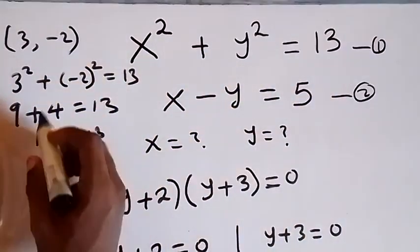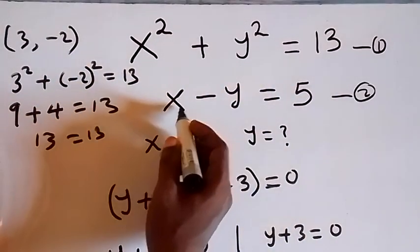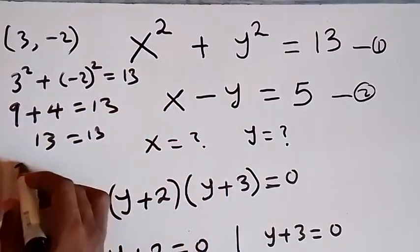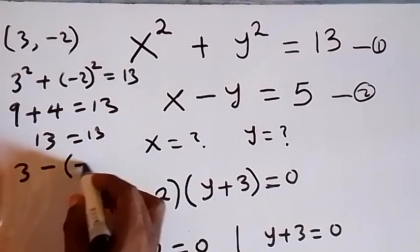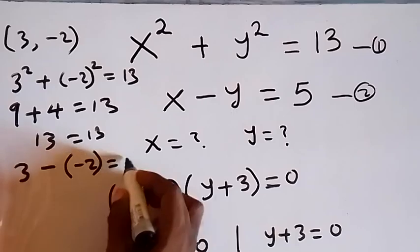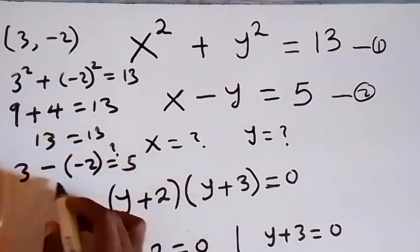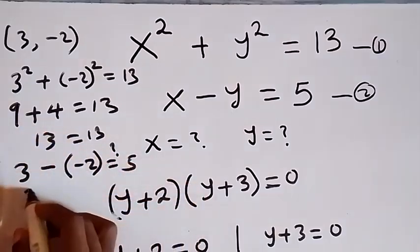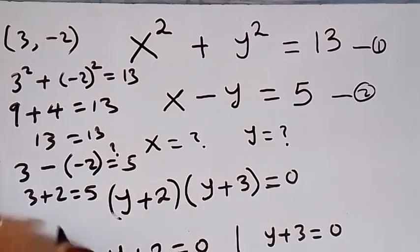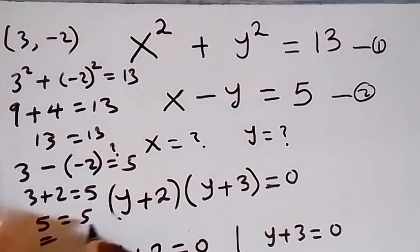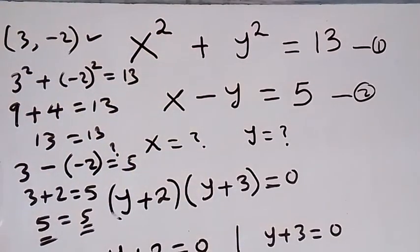Let's check for the second equation as well. We have x minus y, that is 3 minus (minus 2), which is 3 plus 2. This equals to 5, and 3 plus 2 is of course 5, which equals to 5. Left-hand side equals right-hand side. So this first set of solutions satisfies the second equation as well.